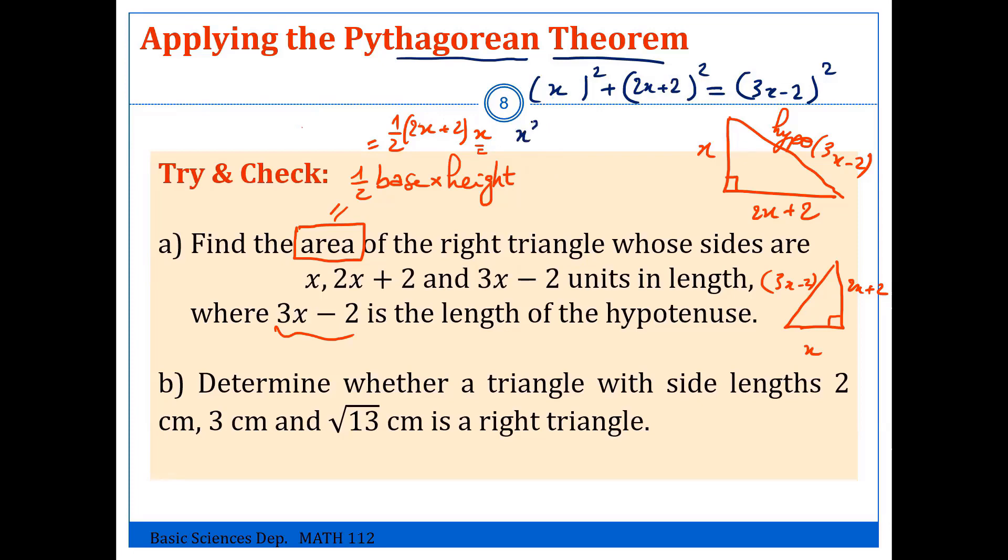So we remove parentheses, so we get x squared plus—be careful, we have a formula for perfect squares. Powers, we cannot distribute power over addition directly, so we have a formula. So the first squared plus 2 times the first times the second, plus the second squared equals,